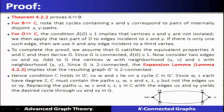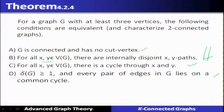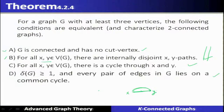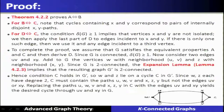Let us see their equivalence. A is equivalent to B: if a graph is connected and has no cut vertex, then there will be internally disjoint paths. From B, if there are internally disjoint paths, obviously there will not be any cut vertex — both are equivalent. B and C are equivalent: if internally disjoint paths pass through x and y, they will form a cycle through x and y.